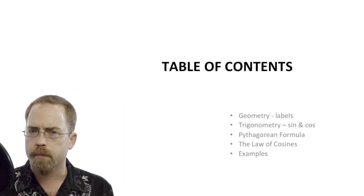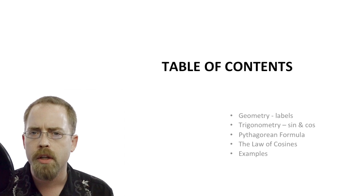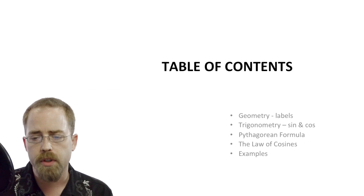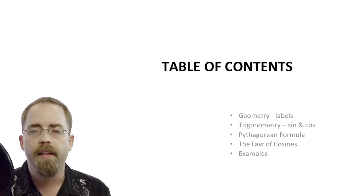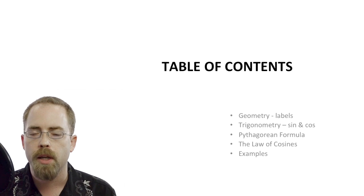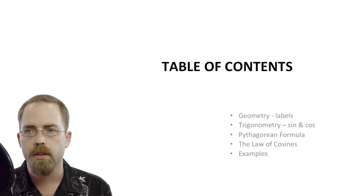So today we need to brush up on some of our geometry labels. There's some terms that we used freshman year that you have maybe forgotten. We need to brush up on our trig, what do sine and cosine do, we'll use the Pythagorean formula. And that will help us build our first non-right triangle building block, the law of cosines. And then we'll have two examples that you need to bring to class.